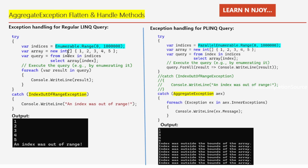I have an int array containing one, two, three, four, five elements. Then I have written a regular LINQ query: query = from index in indices select array[index]. I execute the query by enumerating it with a foreach loop, and whatever result I get, I print it to the console window with Console.WriteLine(result).